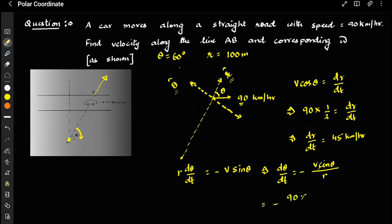So omega equals minus 90 × sin(60°) / r, where sin(60°) = √3/2 and r = 100 m. Converting 90 km/h to m/s gives 25 m/s. The calculation gives minus √3/8 radians per second. This is the corresponding omega for this problem.